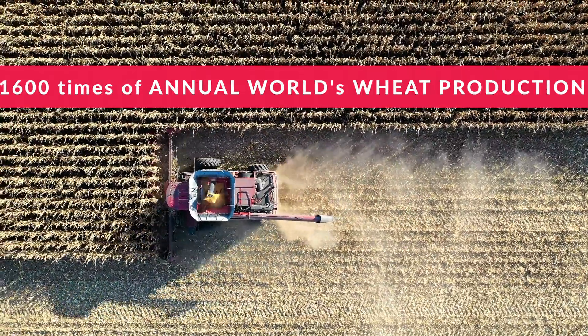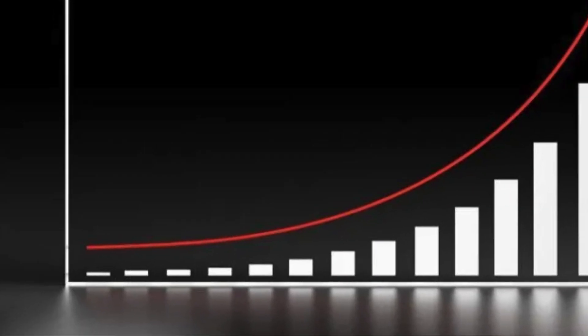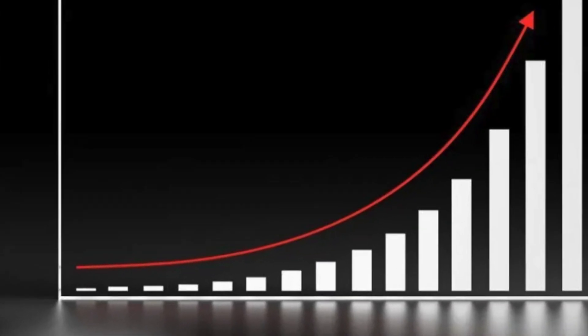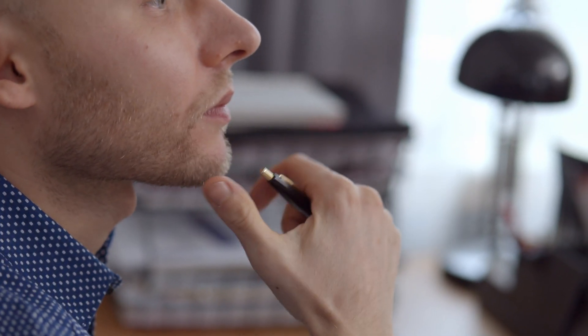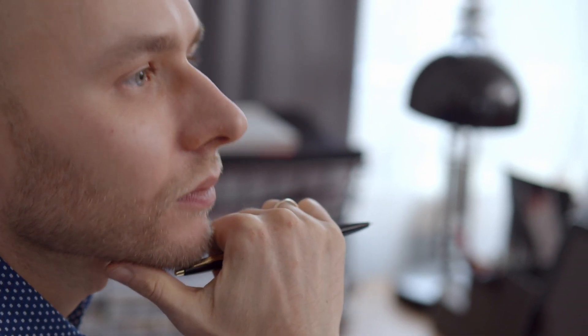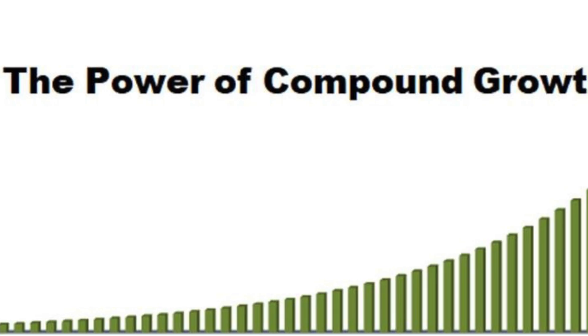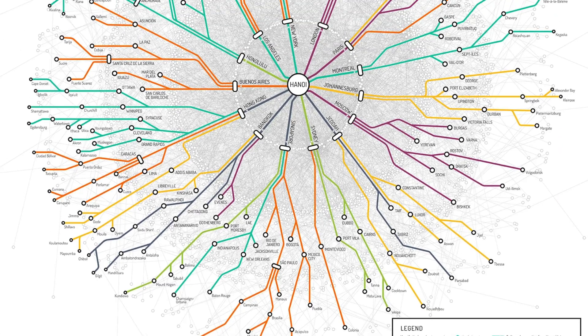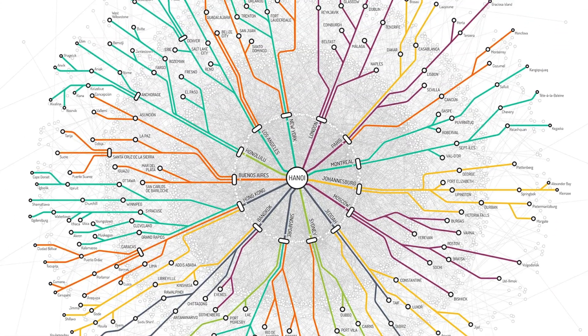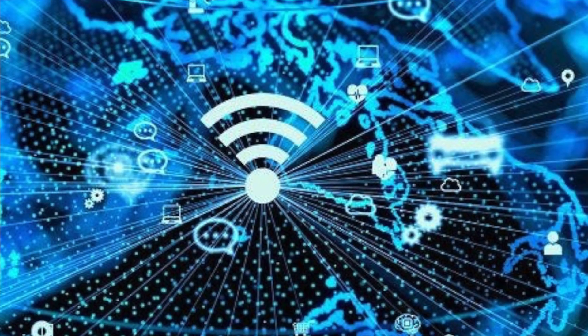Please note this is just an estimation. This puzzle demonstrates the astonishing power of exponential growth. The takeaway is not just about grains of wheat on a chessboard — it's about understanding exponential growth in the real world. It's a lesson in compound interest, population growth, the spread of disease, the growth of technology, and much more.